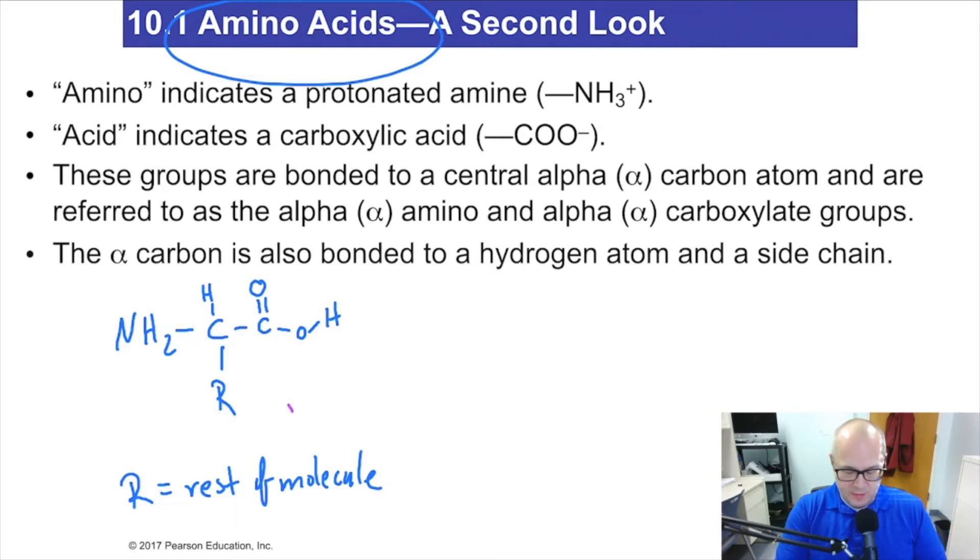Now, this carbon here is known as the alpha carbon. And it's the carbon between the amine and the carboxylic acid. There's only ever one in naturally occurring amino acids. And the difference in all of the amino acids is the R group. All the amino acids have the same structure. It's just the R groups that are different. So every amino acid will have this and this and the alpha carbon and the R groups will change.